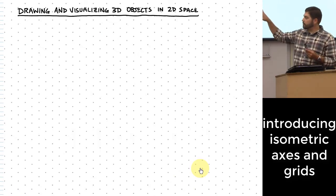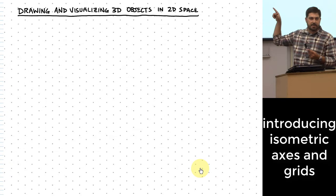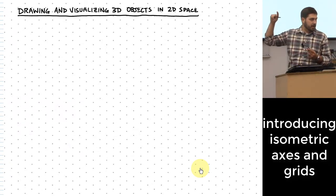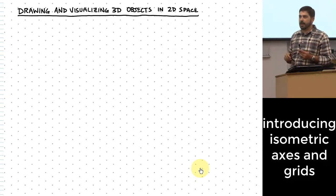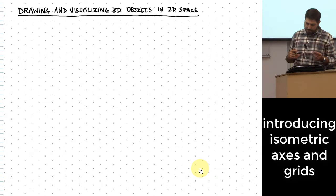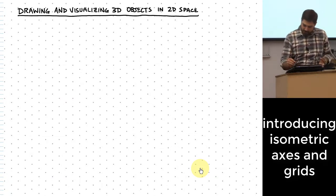You'll notice up on the screen there's a bunch of dots — they don't look like a regular rectangular grid. Instead, these dots are sort of aligned in a way that may not be immediately obvious how they're aligned on the page. Let me make it a little more obvious.